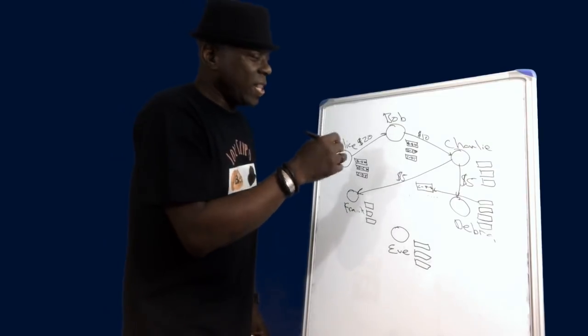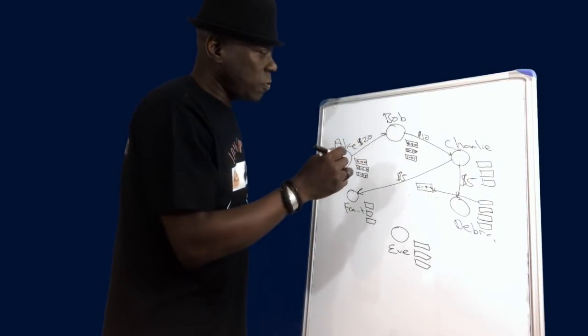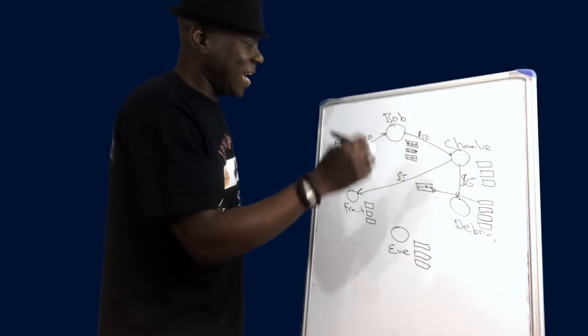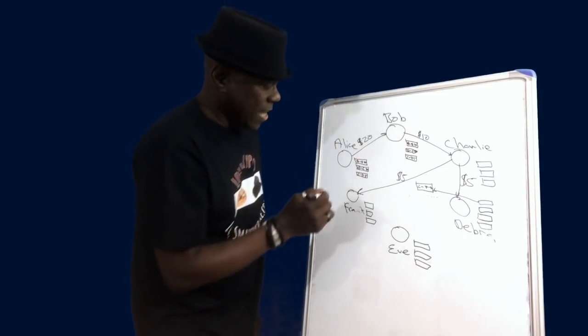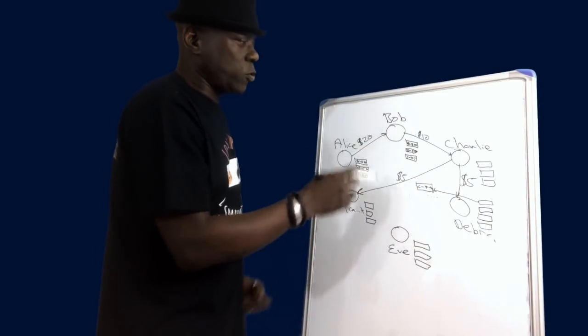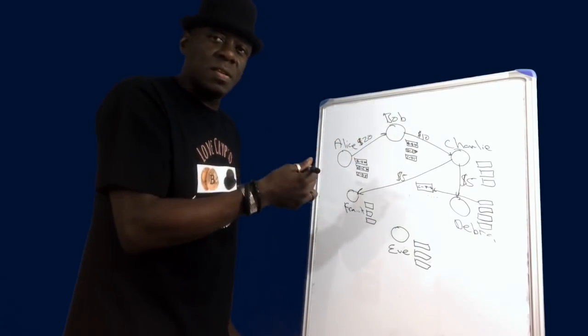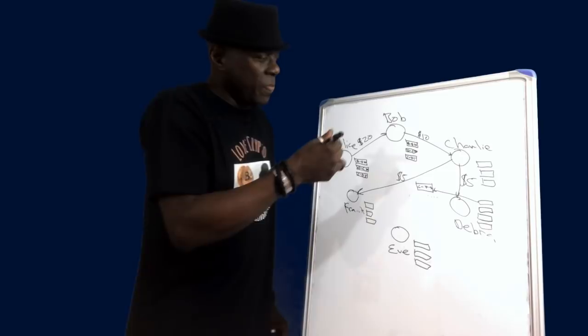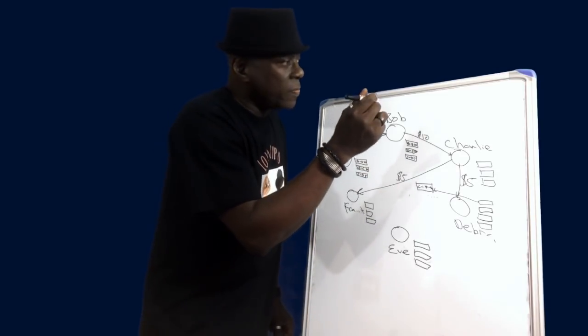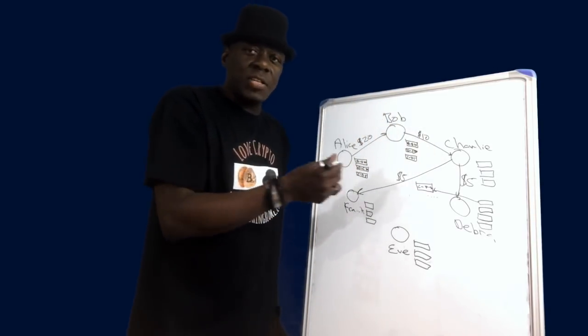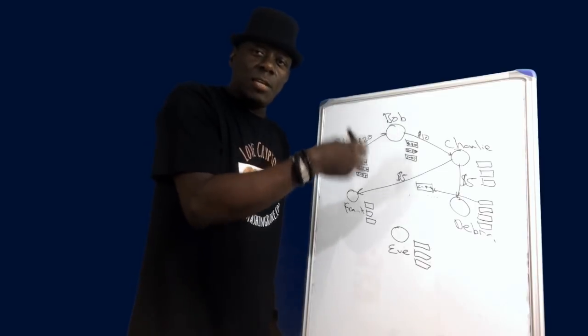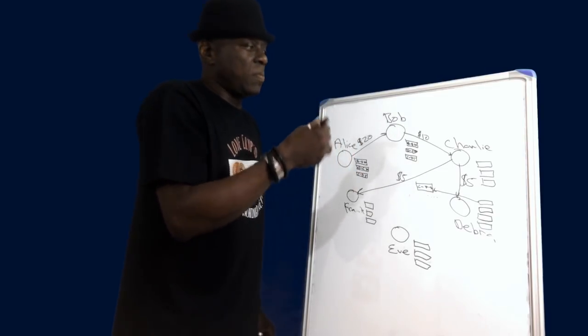Charlie has to campaign and win the votes and approval of all the other nodes. So in this instance Alice, Bob, Frank and even Deborah possibly have to vote for Charlie for Charlie to become a witness. If Charlie becomes a witness that means that Charlie's then assigned transactions which he will then write into the block. Each blockchain will have a number of witnesses.